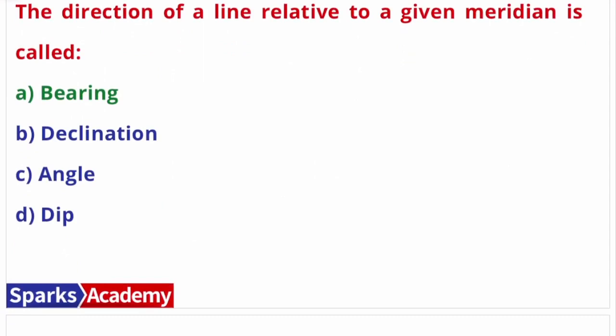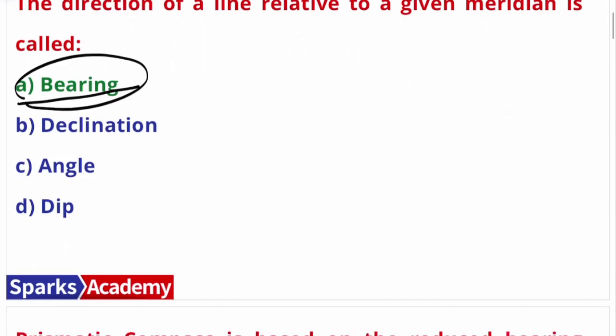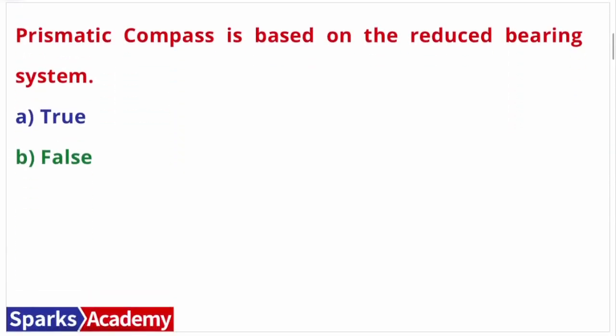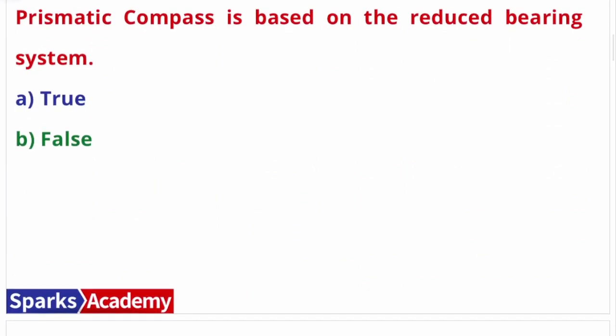So we will discuss some compass surveying related questions in the theory part. First question: the direction of a line relative to a given meridian is called what? The answer is bearing. The direction of a line relative to a given meridian is called bearing — not declination or angle.